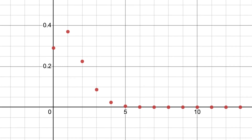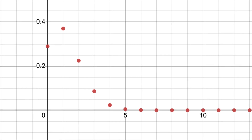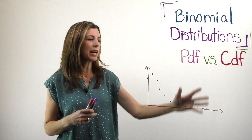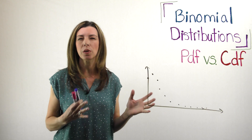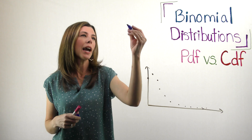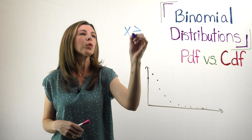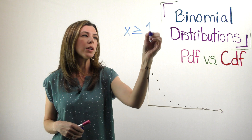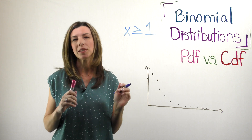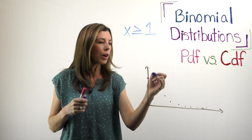On Desmos you can see that I continue to show these probabilities going out towards positive infinity. I'm saying "at least one," so I'm saying I want to know the probability that X is greater than or equal to one. Let's go back to PDF for a second — if I said exactly one, what would you do?